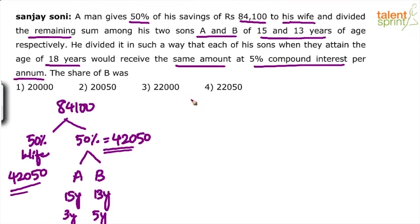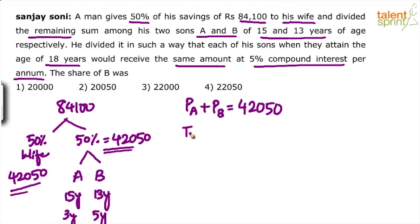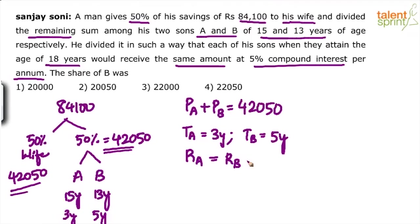So there are basically two different cases. Let us assume: principle of A plus principle of B is equal to 42,050 — that is the total principal amount. Where PA denotes the amount given to A and PB denotes the amount given to B. The time for A equals 3 years, the time for B equals 5 years, because they have to attain 18 years of age. The rate of interest for A equals rate for B, which equals 5%. And remember, this is a compound interest case.